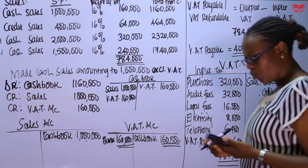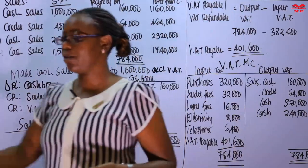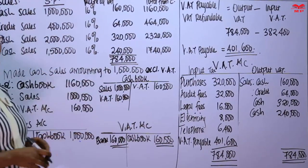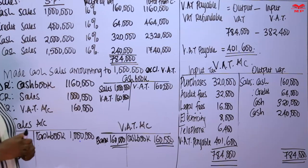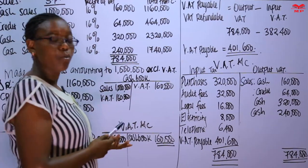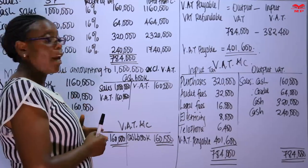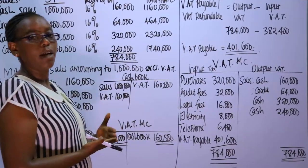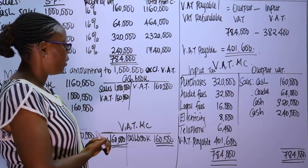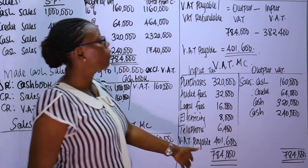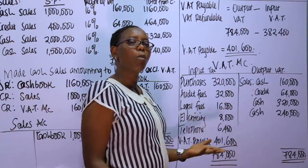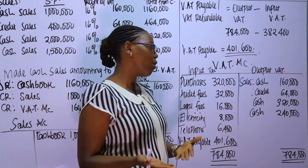Our VAT payable is $4,600. Both sides balance at $784,000. In a VAT account, we do not have a balance carried down. A balance carried down in a VAT account shows that you are yet to pay that VAT, and like all taxes when they accrue, it is a liability. If you don't pay your tax in time, there will be penalties and interest on VAT. You simply balance the account in the normal way.